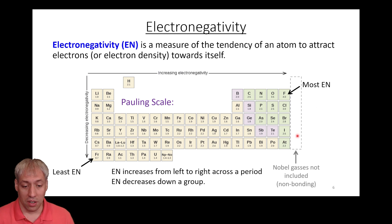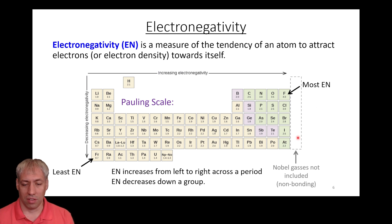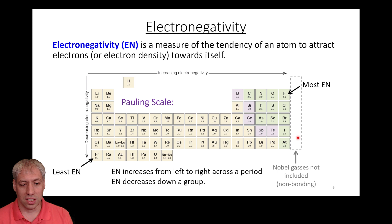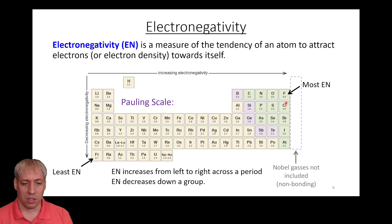Noble gases are not included, mostly because they don't form bonds under normal conditions, so we ignore those. The general idea is that your most electronegative elements are up here on the periodic table, and your least electronegative are going to be down here.